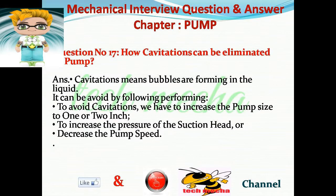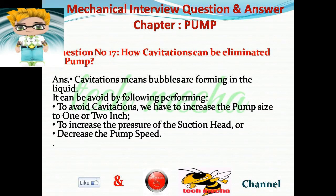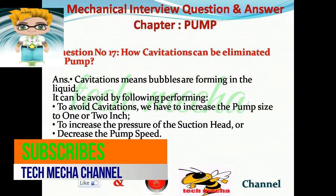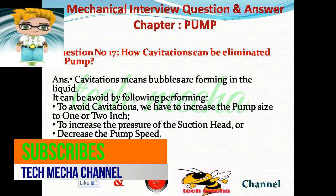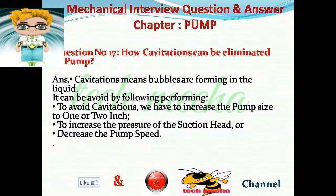Question number 17: How can cavitation be eliminated in a pump? Answer: Cavitation means bubbles are forming in the liquid. To avoid cavitation, we have to increase the pump size by one or two inches, increase the pressure of the suction head, or decrease the pump speed.